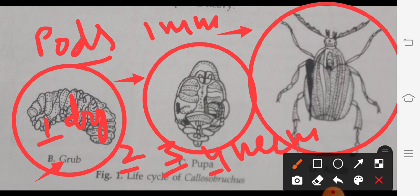This was all about Callosobruchus maculatus, that is the Pulse Beetle. The next stored grain pest we will discuss in the next lecture. Okay, thank you guys.